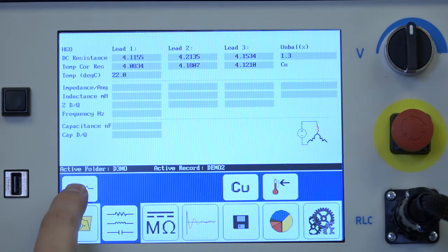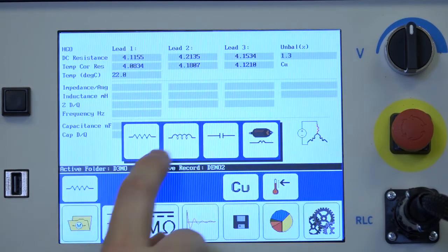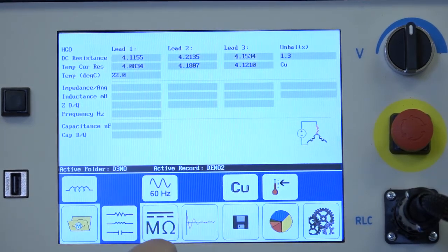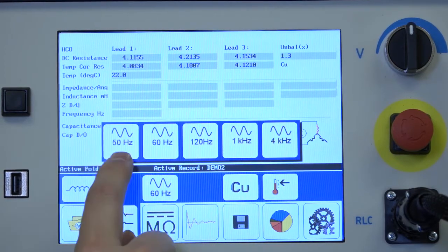Now we'll move on to inductance measurement. Select the submenu icon for inductance. We now have another option for frequency. And you have several options.